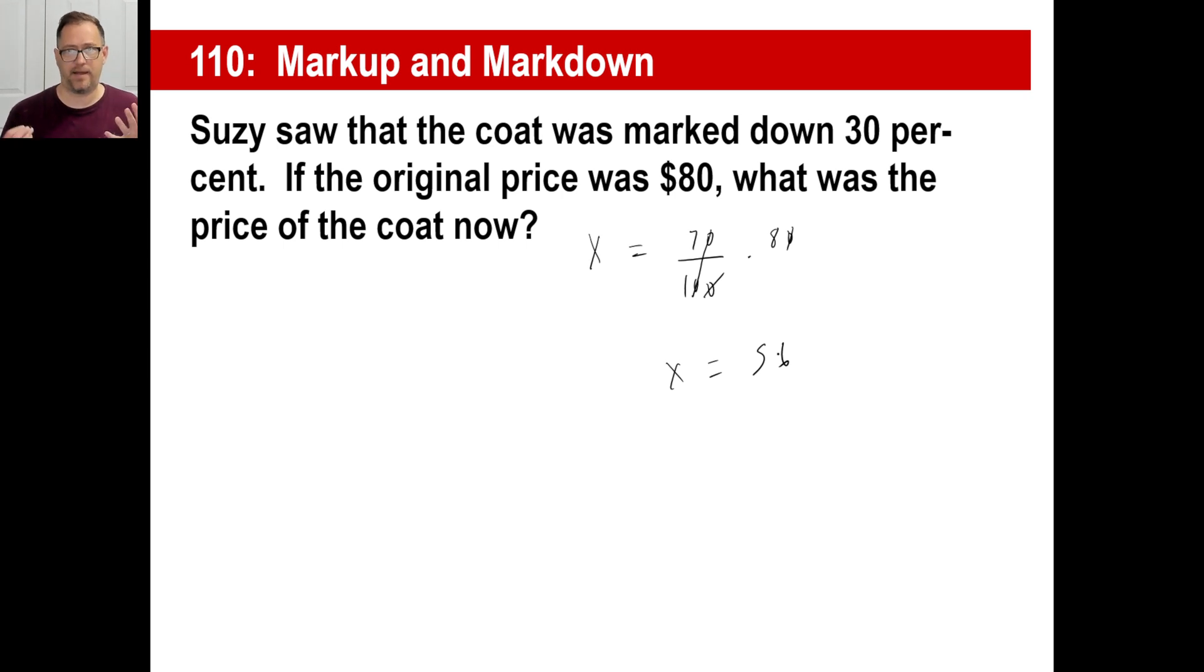So then you would ask yourself, what is 70% of 80? Seven times eight is 56. That's it. That's the easier way, I think. You could also go, I'm going to figure out what 30% of 80 is. Three times eight, that's $24. Now that's how much it's going to be marked off. Let me take that 24 and subtract it from the original price. 80 minus 24, you're going to get the same thing.